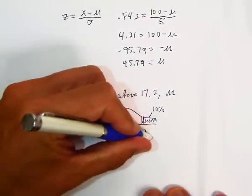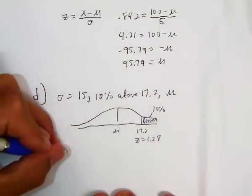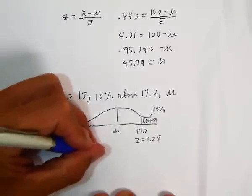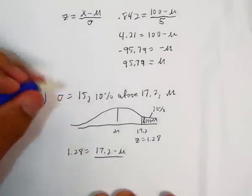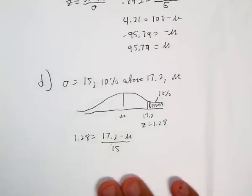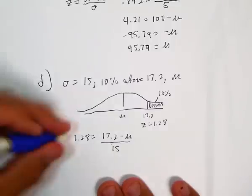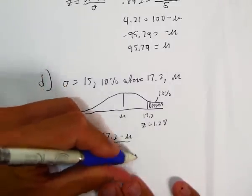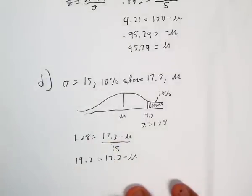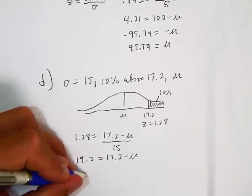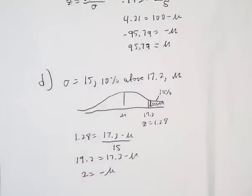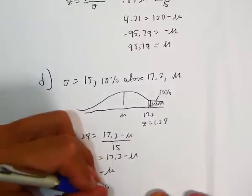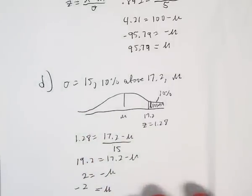So z equals 1.28. We get our z-score formula: 1.28 equals x, which is 17.2, minus mu over sigma, which is 15. We cross multiply: 1.28 times 15 gives us 19.2 equals 17.2 minus mu. We subtract 17.2 from both sides and wind up with 2 equals negative mu. Divide both sides by negative 1 and we get mu equals about negative 2.